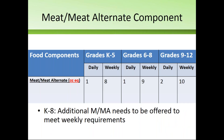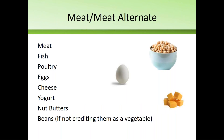Moving on to the meat-meat alternate components. There are both daily and weekly minimum amounts that must be offered to students. Just like grains, meat-meat alternates are offered in ounce equivalents. Meat, fish, and poultry all fall in this component. Meat alternate items include eggs, cheese, yogurt, nut butter, and beans — if you're not using the beans as a vegetable subgroup.